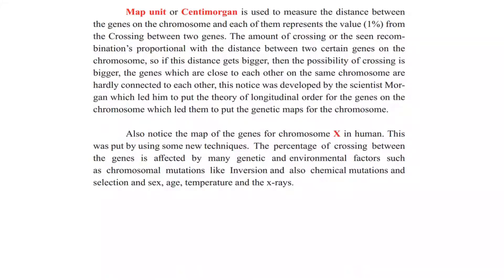Notice the map of genes for the X chromosome in humans, which was prepared using new techniques. The percentage of crossing over between genes is affected by many genetic and environmental factors, such as chromosomal mutation — like inversion, where a part of a chromosome breaks, inverts, and pastes back in position, changing the arrangement. Also chemical mutations — chemicals which cause changes in the structure of DNA — and selection and sex (X or Y chromosome), or the age of the organism, temperature of the environment, or X-rays, which cause changes and damage to the genotype, causing mutation. Mutation, like crossing over, causes the appearance of new phenotypes.